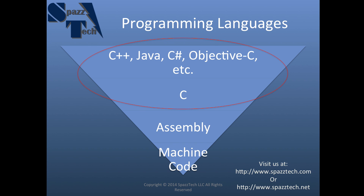None of us speak the language of computers, but there are several computer programming languages out there. At the very low level, we have machine code, and this is the closest to what the computer actually speaks. Machine code is basically binary. At the very lowest level, a computer only knows yes or no, or ones and zeros. And so machine code is just a series of ones and zeros.